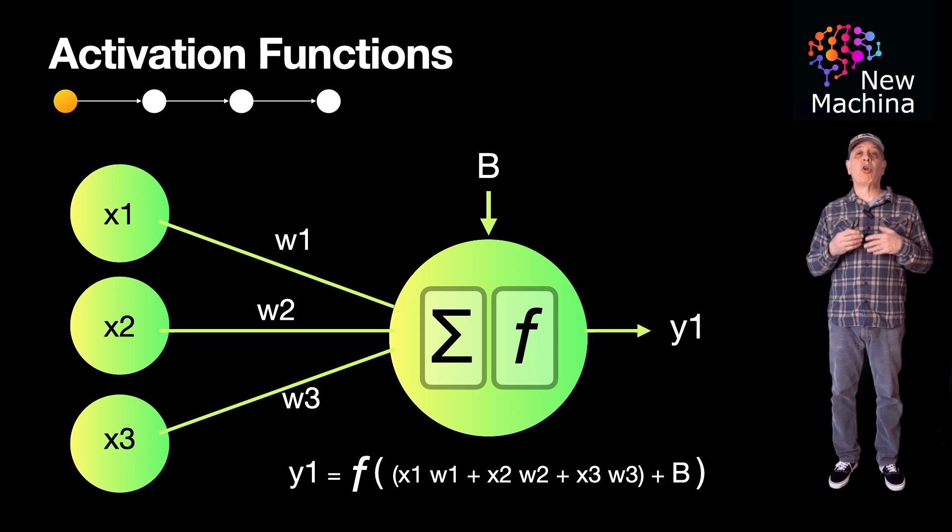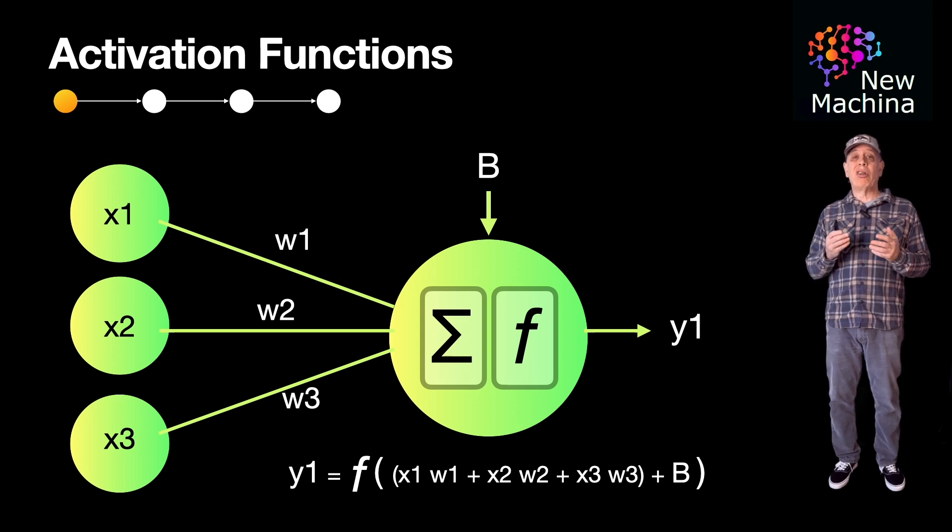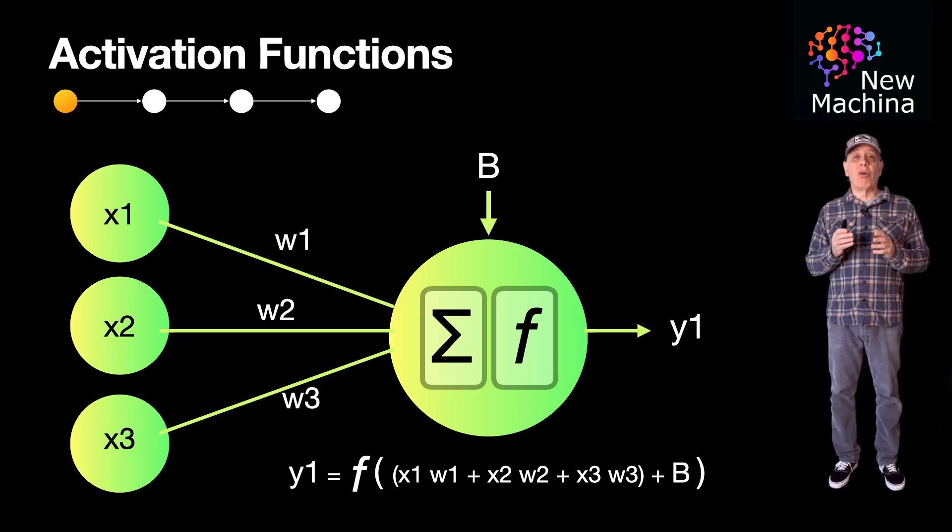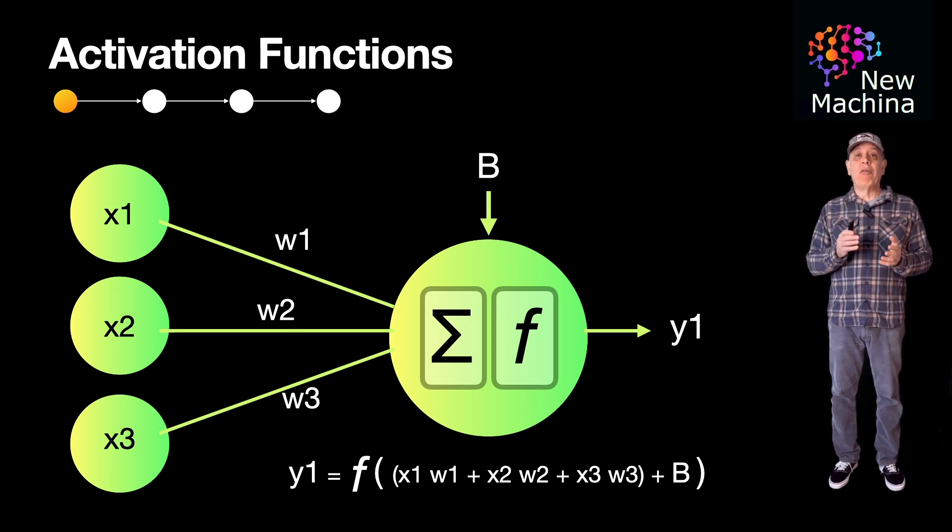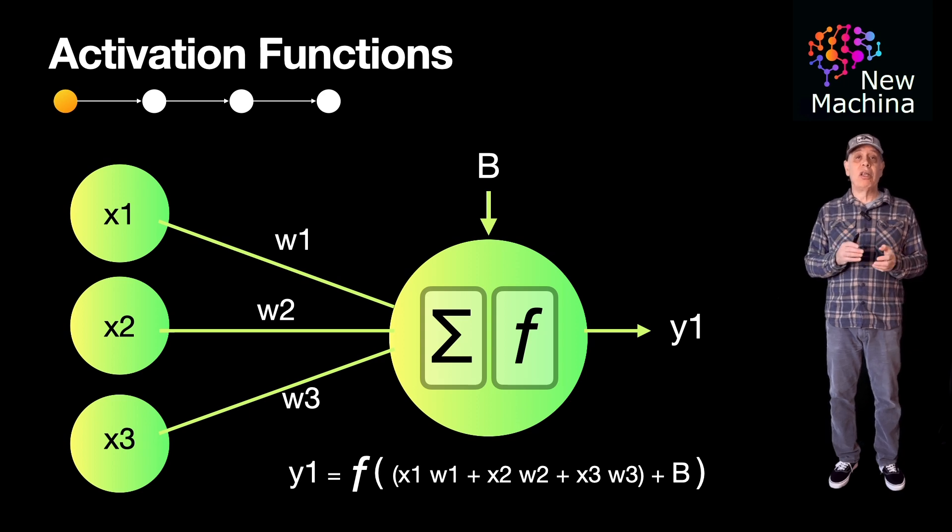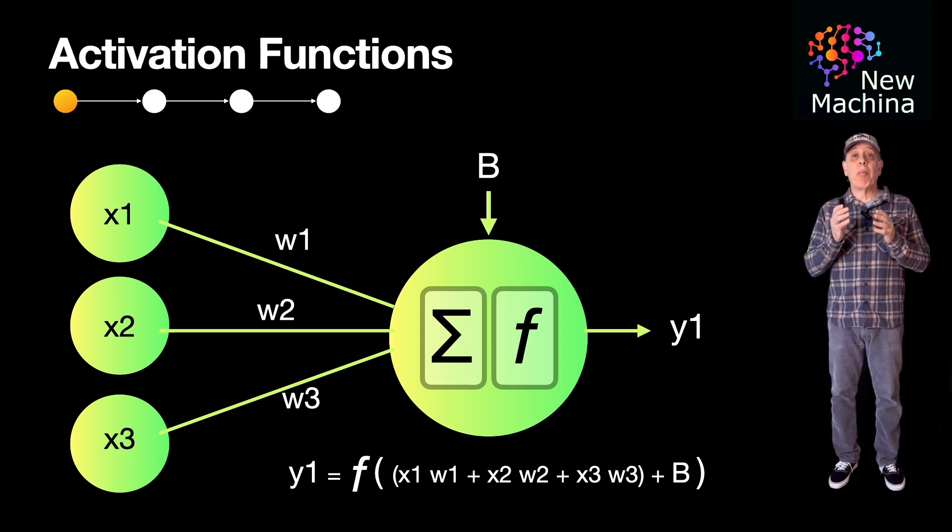So when a neural network is created, how are the weights and biases determined? Well, initially, they're initialized to random values. The neural network can then be trained. Training a neural network involves a series of steps to optimize its weights and biases so that it can make accurate predictions.